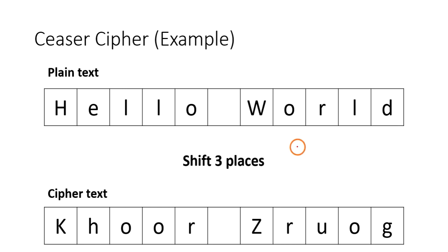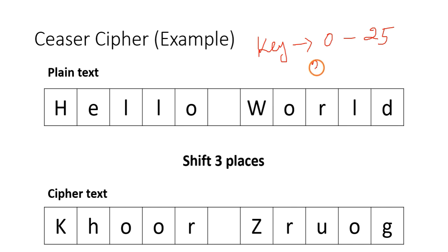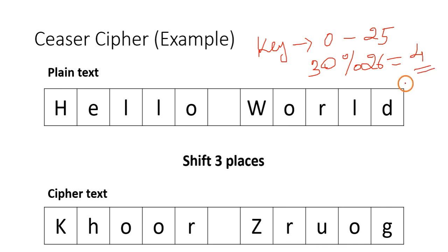There are two conditions to handle in Caesar cipher. First, the key should always be between 0 and 25 inclusive. If someone gives a key of 30, we do mod 26, which gives 4, and shift each character by 4 places.